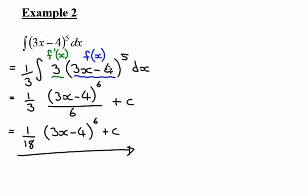Then I go inside. So I've got my third so far. I've got my 3x minus 4 to the power of 5. Chain rule says I must go inside. The derivative of 3x minus 4 is 3. There's my 3. Okay, so it does work.